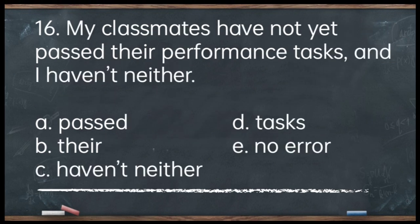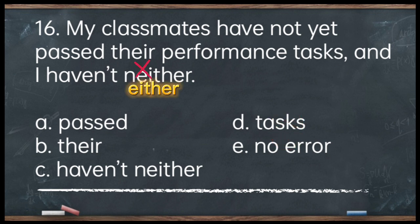Number 16. My classmates have not passed their performance tasks and I haven't neither. A. Pass. B. Their. C. Haven't neither. D. Tasks. E. No error. The answer is letter C — 'haven't neither.' You cannot have two negatives at a time as it is redundant. Instead of 'haven't neither,' say 'haven't either.' Corrected: My classmates have not yet passed their performance tasks and I haven't either.